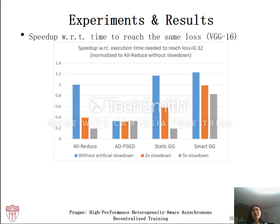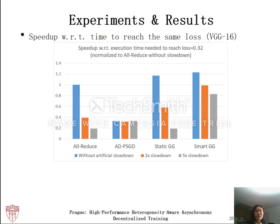Next, we compare the time for different algorithms to reach the same loss value. The speedup is again normalized to allreduce without slowdown — higher bars indicate better speedups. The blue, orange, and gray bars show speedup in execution time with no slowdown, two times slowdown, and five times slowdown injected, respectively. We can see that both allreduce and static GG are greatly affected by slowdown. ADPSGD is very resilient to slowdown, but the heavy synchronization overhead prevents it from achieving ideal performance. In all three settings, SmartGG has the best performance.